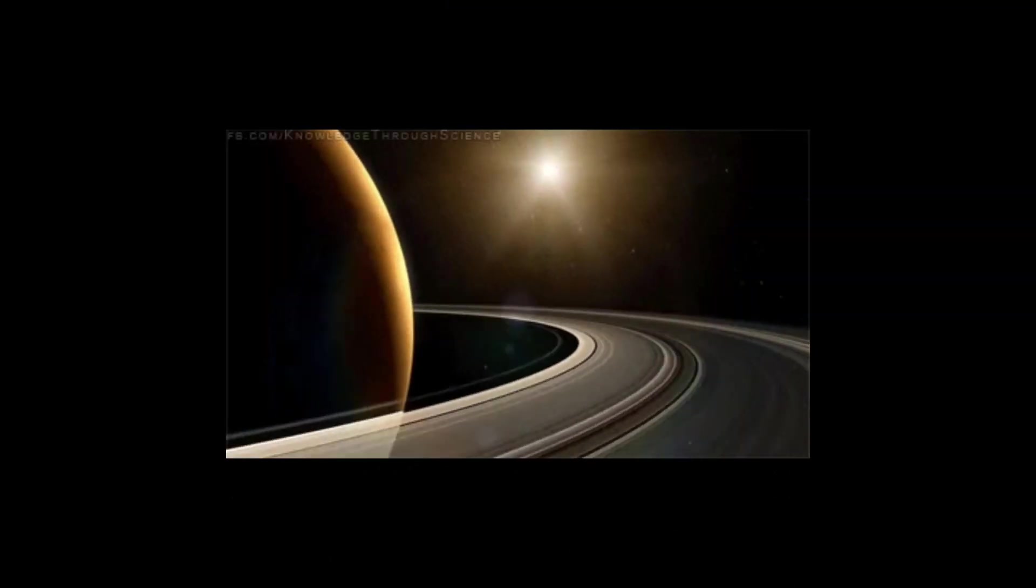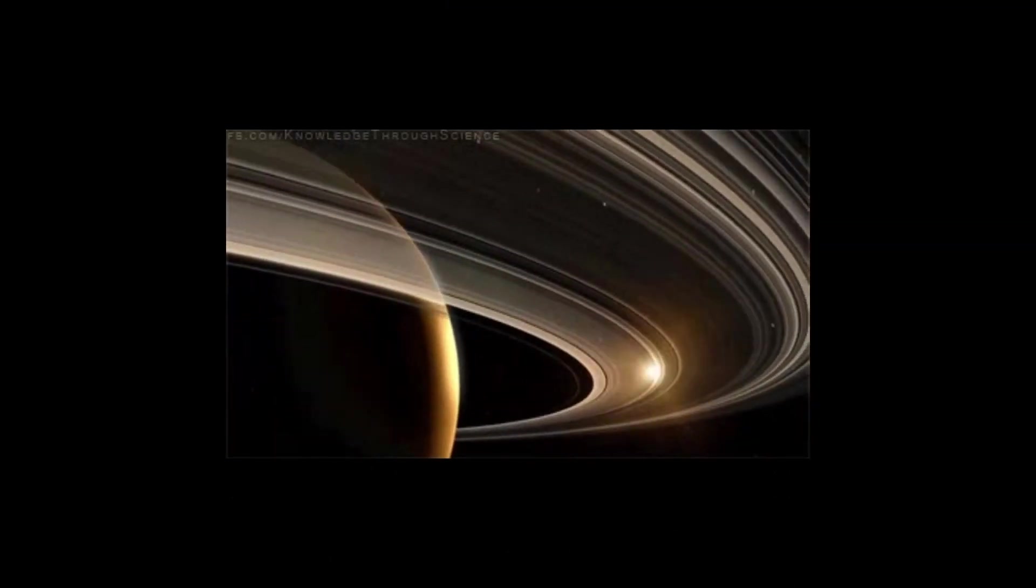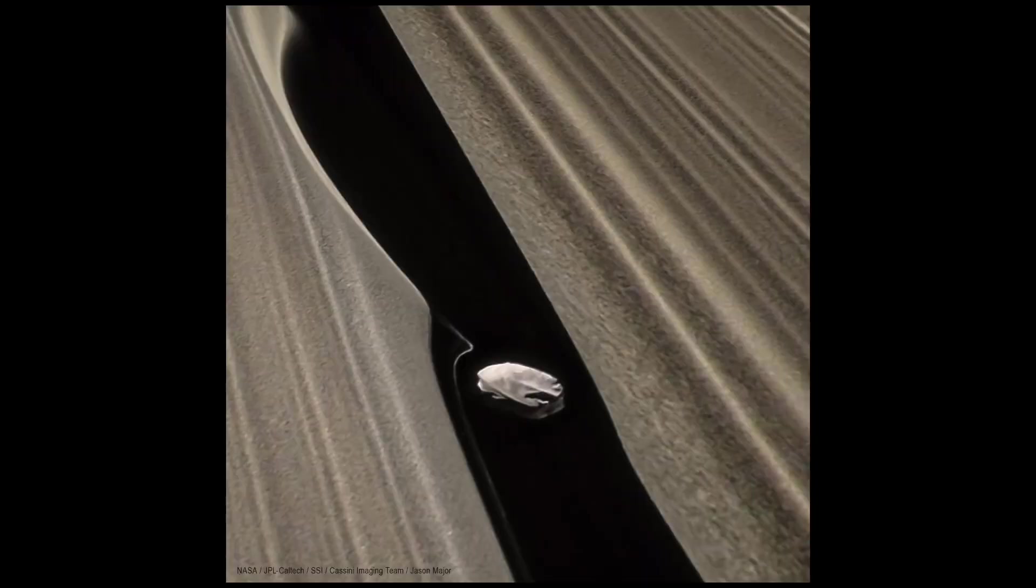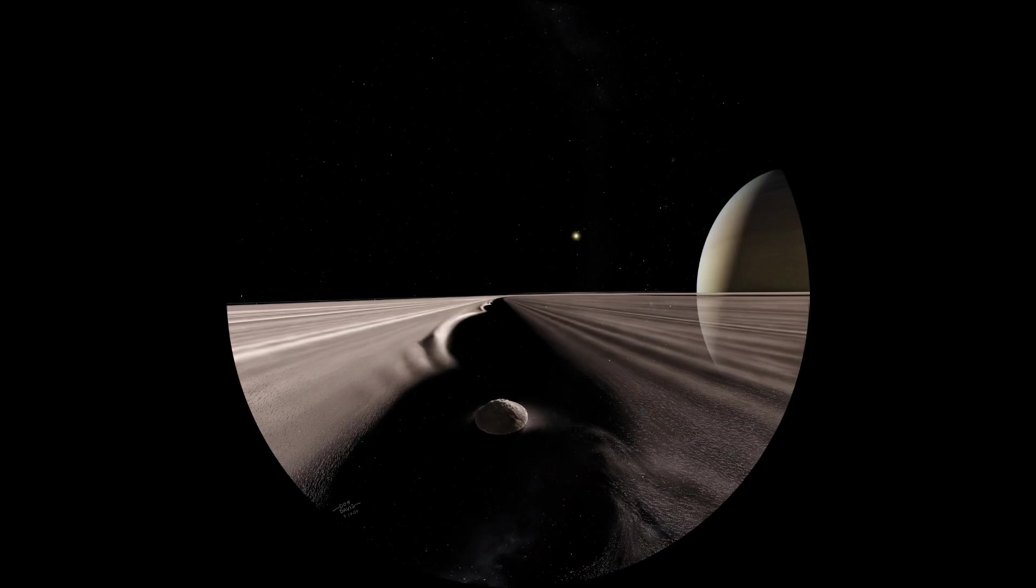Pan is a moon of Saturn that orbits within its rings. Although only 5 miles, 8 kilometers, across, its gravity is powerful enough to disrupt the tiny particles of the A-ring that form the Keeler Gap's edge in Saturn's rings.